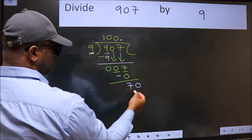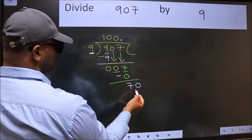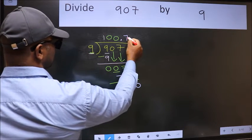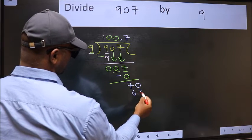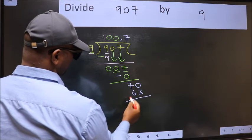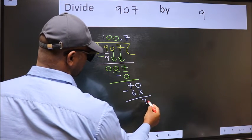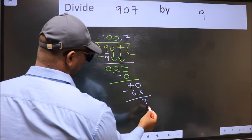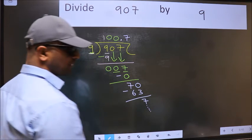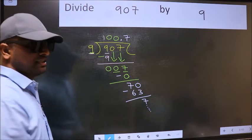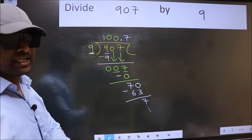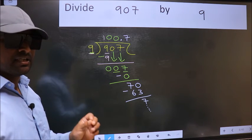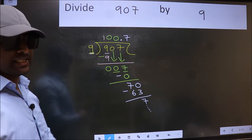So 70. A number close to 70 in the 9 table is 9 sevens, 63. Now we should subtract, we get 7, and you continue the division. Did you understand where the mistake happens? You should not do that mistake.